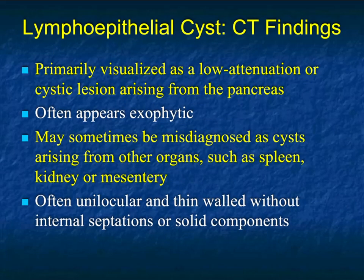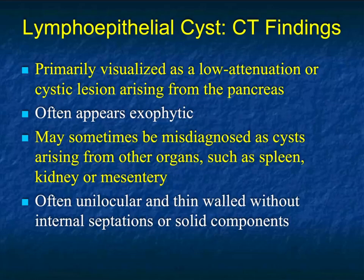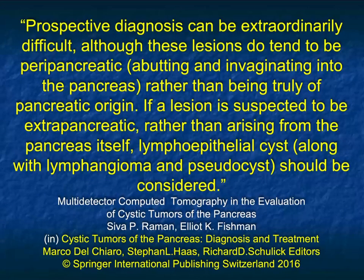We left off last time mentioning lymphoepithelial cysts. It's one of the things that's often left off the list of cystic pancreatic lesions, but it's an uncommon lesion. It's typically low CT attenuation arising from the pancreatic gland, and it seems to come off the surface of the gland. It often appears exophytic and can be large, so it can be mistaken as cystic lesions arising from adjacent organs like spleen, kidney, mesentery, or even stomach. It's often unilocular and thin-walled without internal septations or solid components.